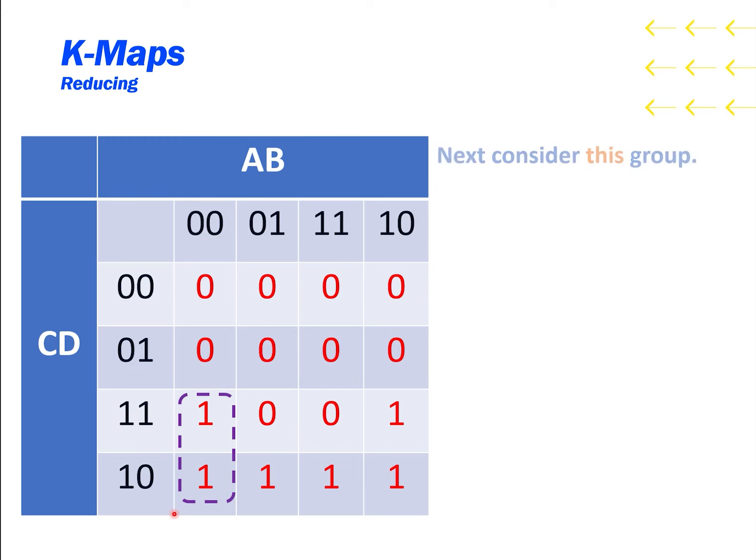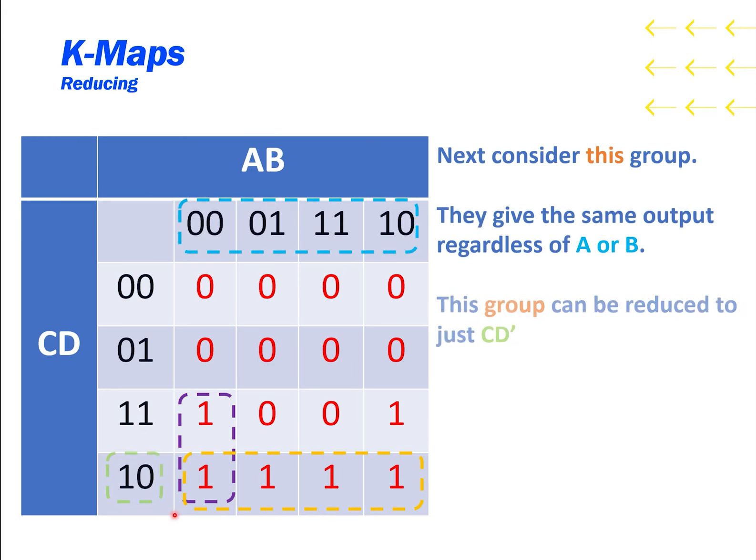Next, let's consider this group. This group shows that when the inputs include C and D', the output does not depend on A or B. This group can be reduced to just C, D'. In order to have a complete function, we have to map all of the outputs, so we need to include just one more output to finish the function.